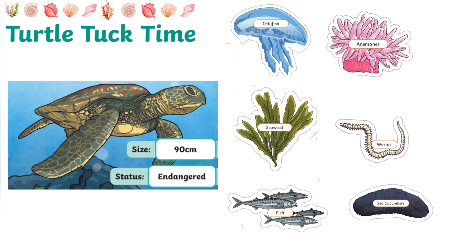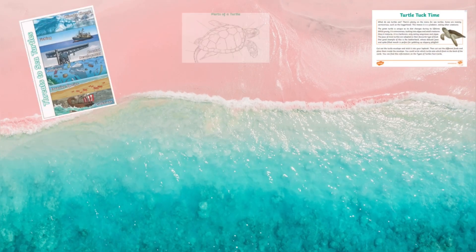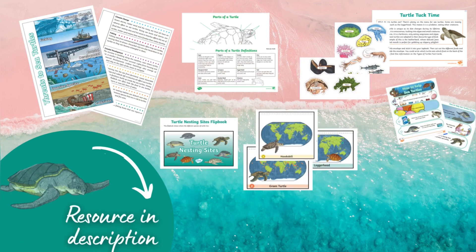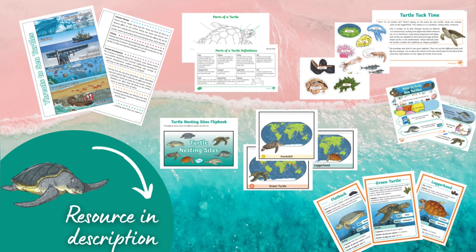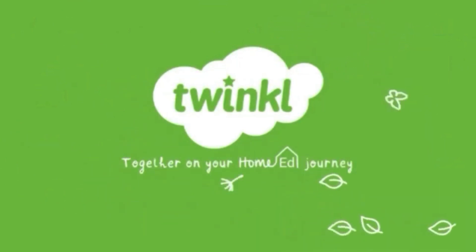This one's a bit trickier. What would an immature green turtle like to eat? Immature just means not yet an adult. Would they like jellyfish and anemones? Seaweed and worms? Or fish and sea cucumbers? If you chose seaweed and worms, you're right! Thanks for joining me today and don't forget to download your Twinkle Sea Turtles resource. You'll find the link below this video.